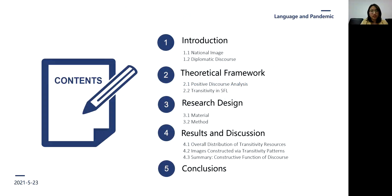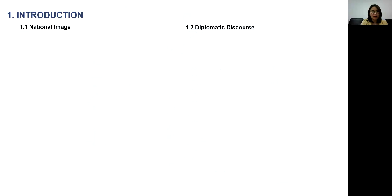The first is the introduction of the national image and the diplomatic discourse. The second is the theoretical framework of positive discourse analysis and transitivity in systemic functional linguistics. The third is the design of the research. The fourth is the results and discussion, which is the most important part. And the last one is the conclusions. Let's start with the national image.